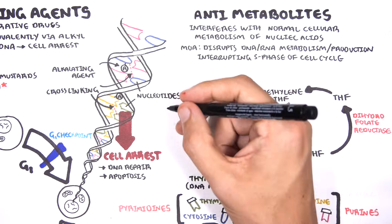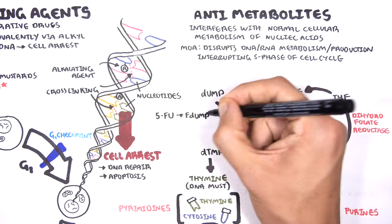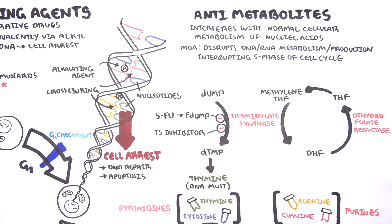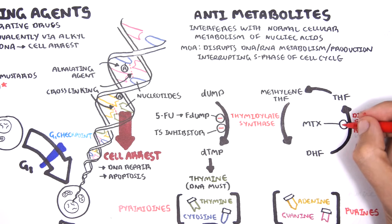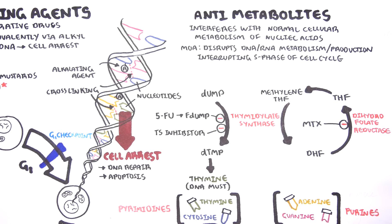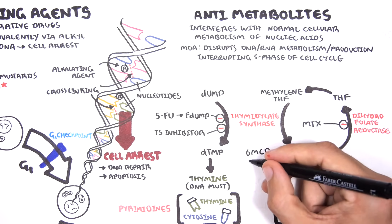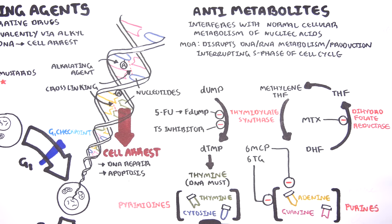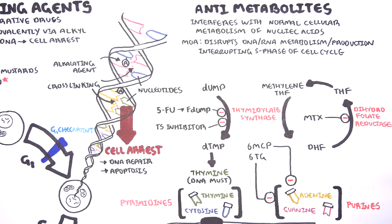A few chemotherapy agents work here. These include 5-fluorouracil, which inhibits thymidylate synthase, and specific thymidylate synthase inhibitors. Methotrexate — a drug also used in rheumatoid arthritis and ectopic pregnancy — works by inhibiting dihydrofolate reductase. Other chemotherapy agents targeting purine metabolism and synthesis include mercaptopurine and thioguanine. In summary, anti-metabolites work by disrupting DNA and RNA metabolism and production, preventing cancer cells from progressing through the cell cycle.